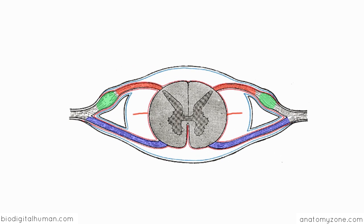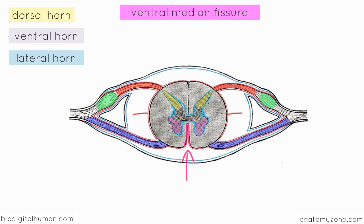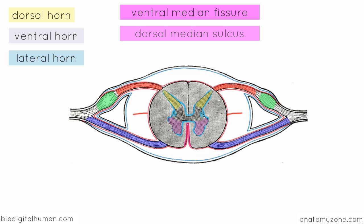Now we'll take a look at the basic internal structure of the spinal cord. In the middle there's an H-shaped configuration of grey matter, which I've outlined in light blue, and outside this you've got the white matter. The posterior projection of grey matter is known as the dorsal horn, highlighted in yellow, and ventrally you've got the ventral horn. In the upper lumbar and thoracic regions of the spinal cord, you've also got a lateral horn, highlighted in light blue. There are also two grooves running into the spinal cord: anteriorly, the ventral median fissure, outlined in pink, and posteriorly, the dorsal median sulcus.